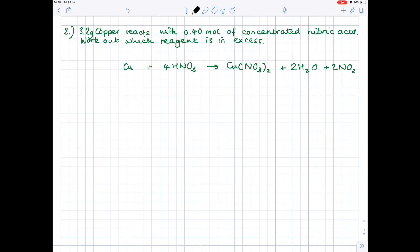So question 2. 3.2 grams of copper reacts with 0.4 moles of concentrated nitric acid. Work out which reagent is in excess. Happily here, we've been given our balanced symbol equation. Notice that we're looking for the reagent in excess, so the plentiful one, as opposed to the limiting one. But don't worry, the maths is still the same.